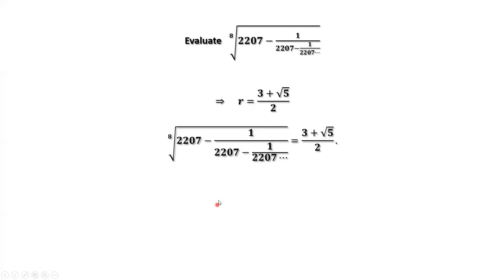What is r? r is this expression we want to evaluate. Therefore, the answer is 3 plus square root of 5 over 2. That's all. Thanks for watching, and I'll see you next time.